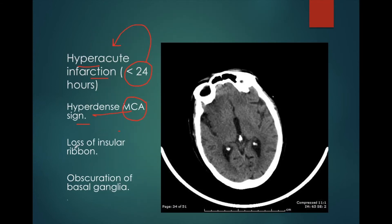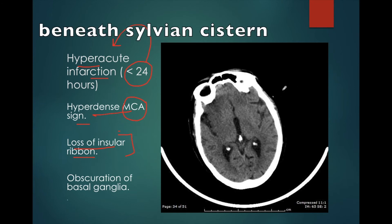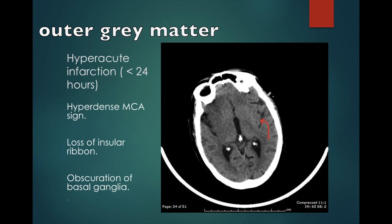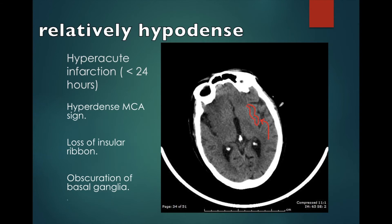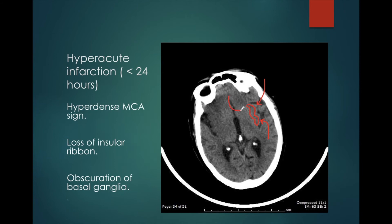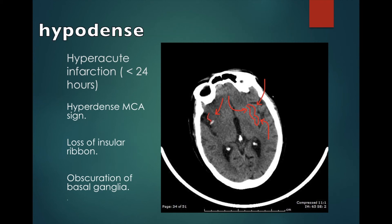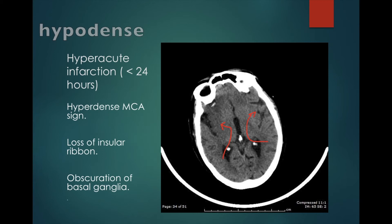There is also another sign known as loss of the insular ribbon. The insular cortex is the area of the brain that lies beneath the sylvian fissure. We can see that the insular cortex consists of an outer core of gray matter which appears hyperdense and an inner core of white matter which appears relatively hypodense. So this part is the gray matter of the insular cortex and this is the sub-insular white matter. But on the right side, this insular differentiation of the cortex is lost, and the insular cortex appears hypodense. This is known as the insular ribbon sign.